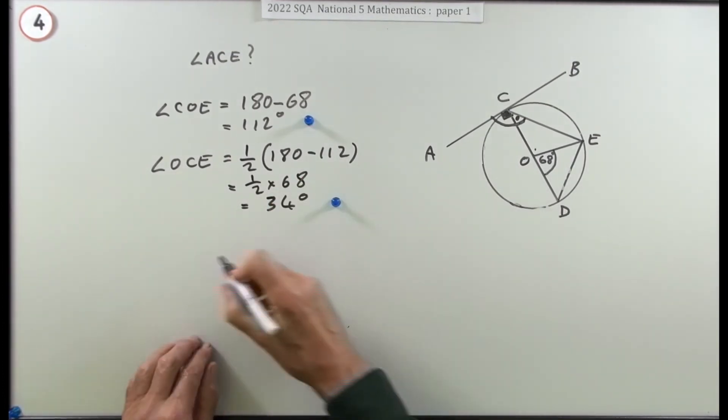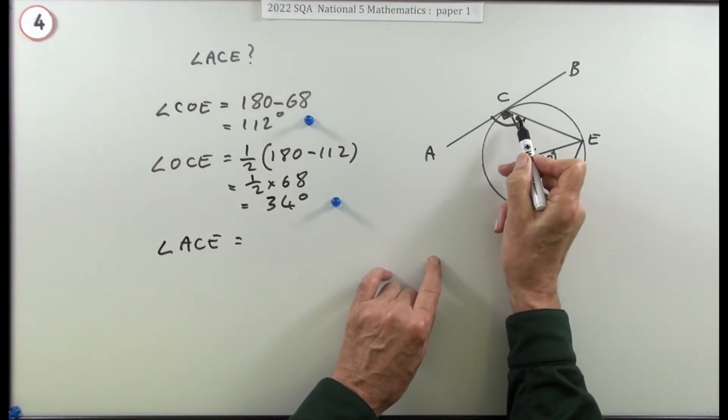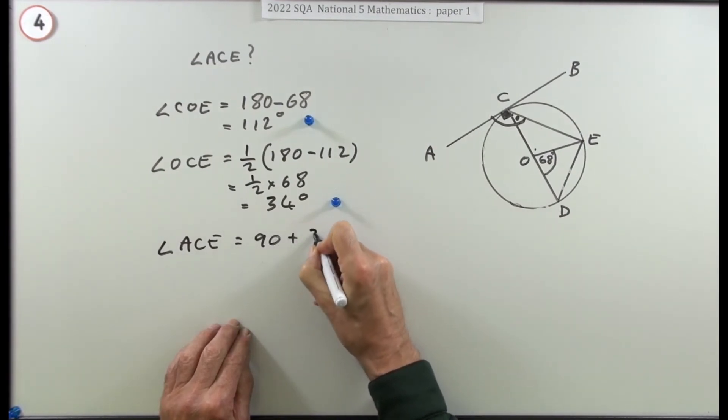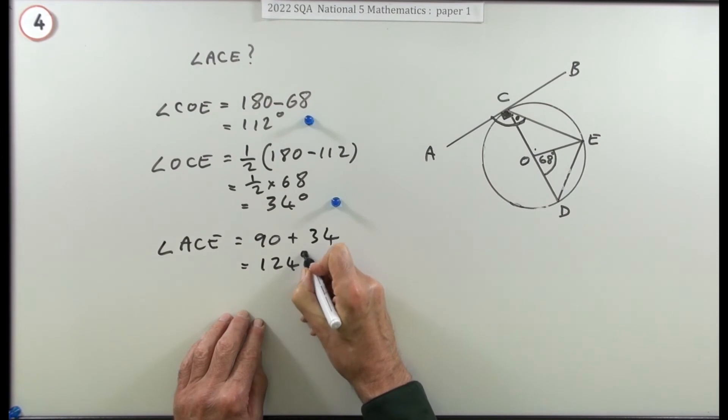That would get a mark. And then finally the angle they want, ACE - well that's made up of this one plus the 90, so it's 90 plus the 34, so that's going to be 124 degrees.